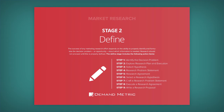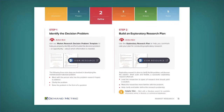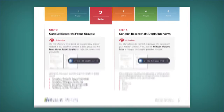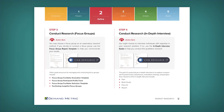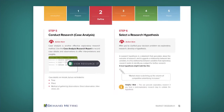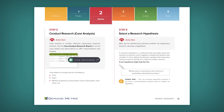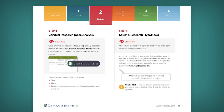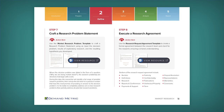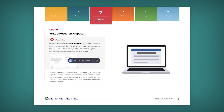In Stage 2, we focus on definition. The first step is to identify the decision problem, then build an exploratory research plan, and then conduct research with focus groups, in-depth interviews, and case analysis. Then select a research hypothesis, craft a research problem statement, execute a research agreement, and write a research proposal.